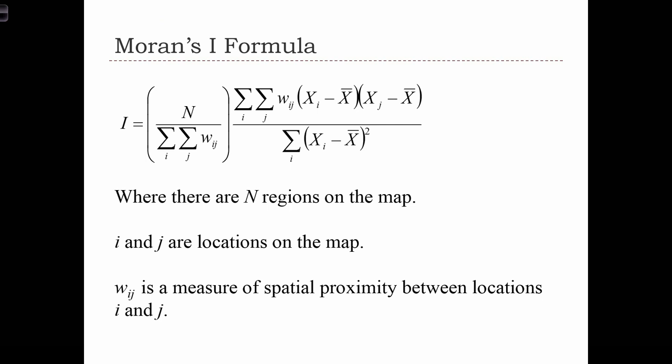In order to quantify the amount of spatial autocorrelation in a variable x, we are going to use Moran's I statistic. Moran is the name of the gentleman who discovered the statistic in the earlier part of the 1900s.